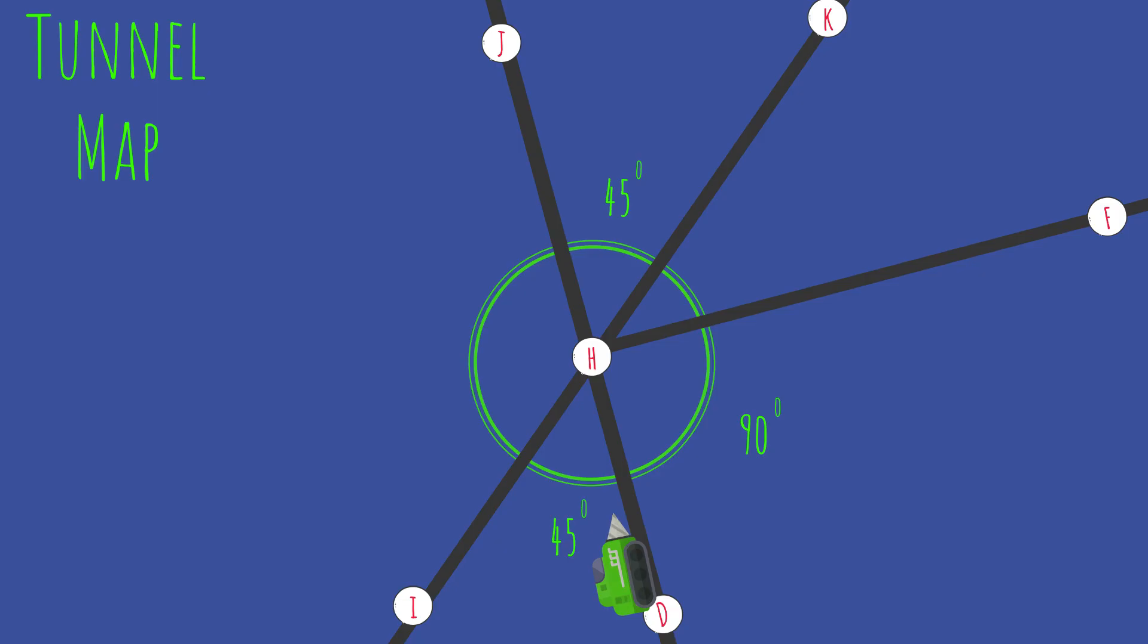Vertical angles are always opposite from each other. They are also congruent, meaning they have the same degree. Sounds easy enough. Vertical angles mirror each other. I'll take this tunnel. The other two seem to match.